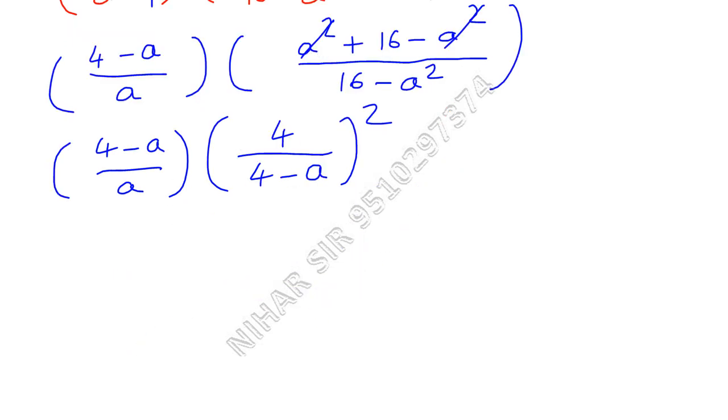In another bracket I will use the identity: a squared minus b squared equals a minus b times a plus b. So here I will write 4 upon 4 minus a, in another bracket 4 upon 4 plus a.